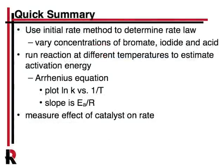We're going to use this clock reaction as an initial rate, which will allow us to determine the rate law. We're going to vary the three species — the bromate, the iodide ion, and the acid concentrations — by changing the volumes. Then we'll measure how long it takes to get to the blue color, and that gives us a relative rate, which allows us to determine the order. If we double the concentration of something and it halves the time it takes, then it's first order. If it doesn't affect it at all, it's zero order.